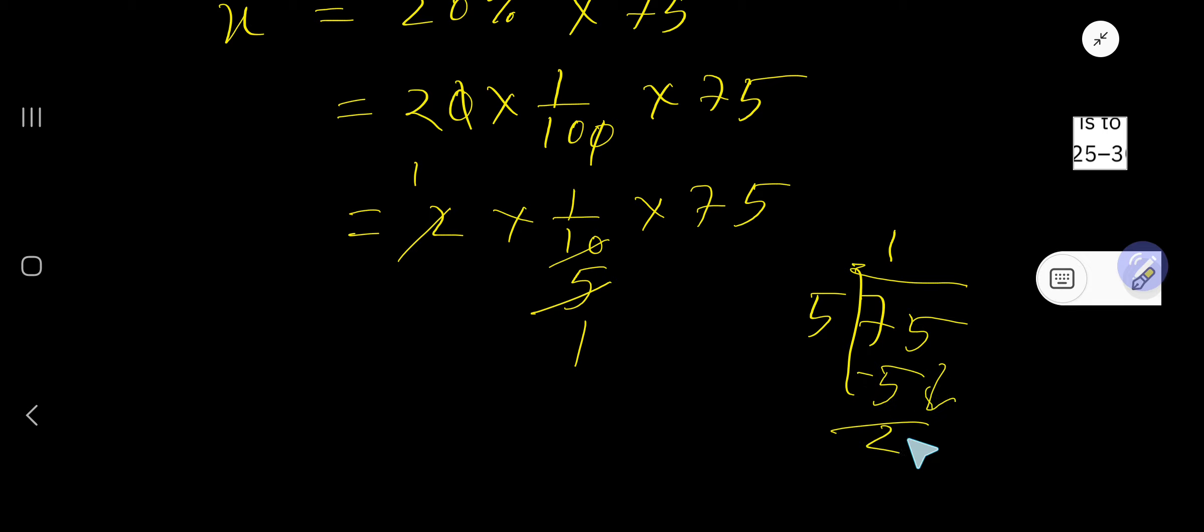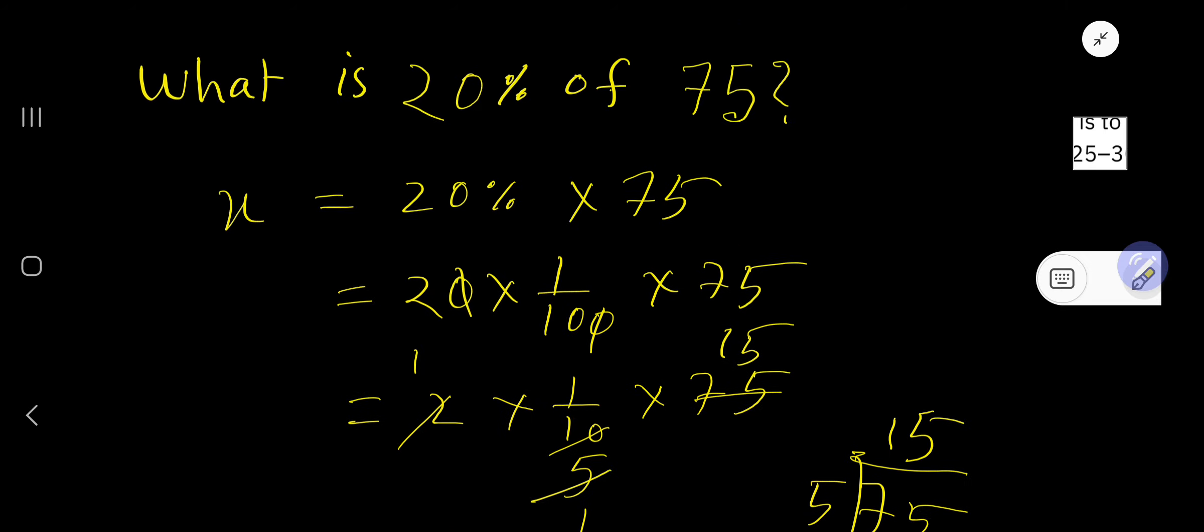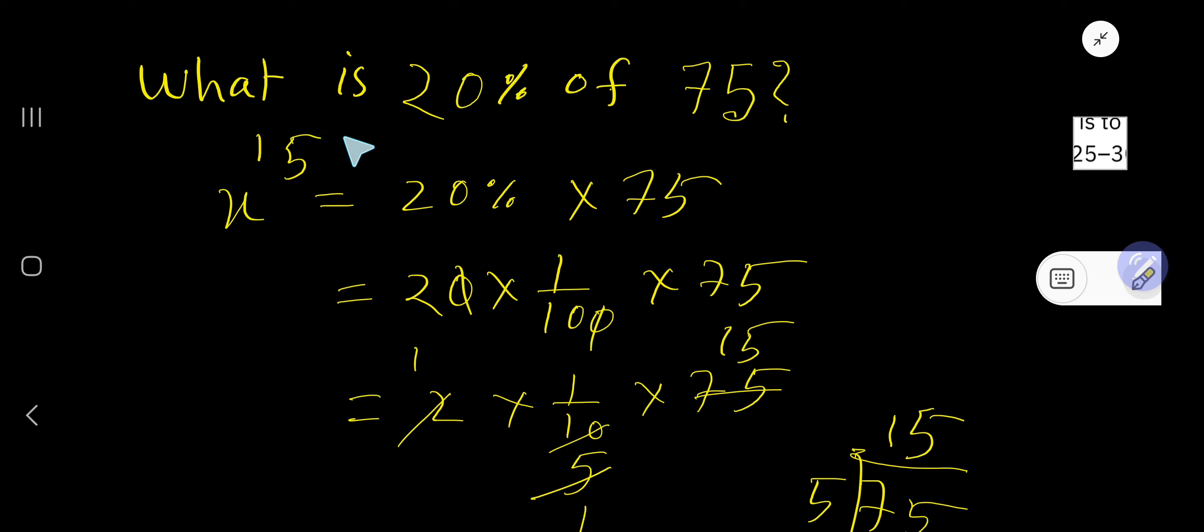5 goes into 25, 5 times. That is, if you divide 75 by 5 you will get 15. So 1 times 1 over 1 times 15 equals 15. That is, 1 times 1 times 15, that is 15. So 15 is 20% of 75.